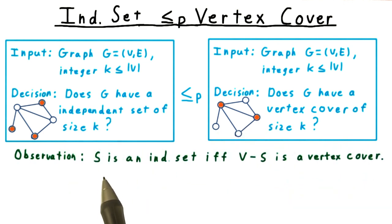Thus, we have the observation that a subset of the vertices S is an independent set if and only if V minus S is a vertex cover.